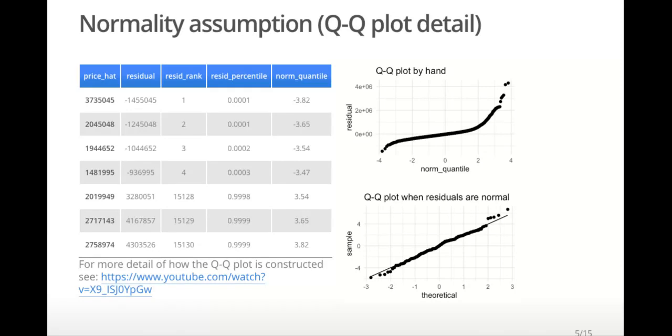The last column, norm quantile, gives the corresponding quantile of the standard normal distribution based on the residual percentiles. Let's look at the fourth ranked residual as an example. The residual percentile of 0.0003 is obtained by dividing 4 by 15,131. Then, the standard normal quantile is the value on the standard normal distribution where the probability of being less than that value is 0.0003. That value is negative 3.47.